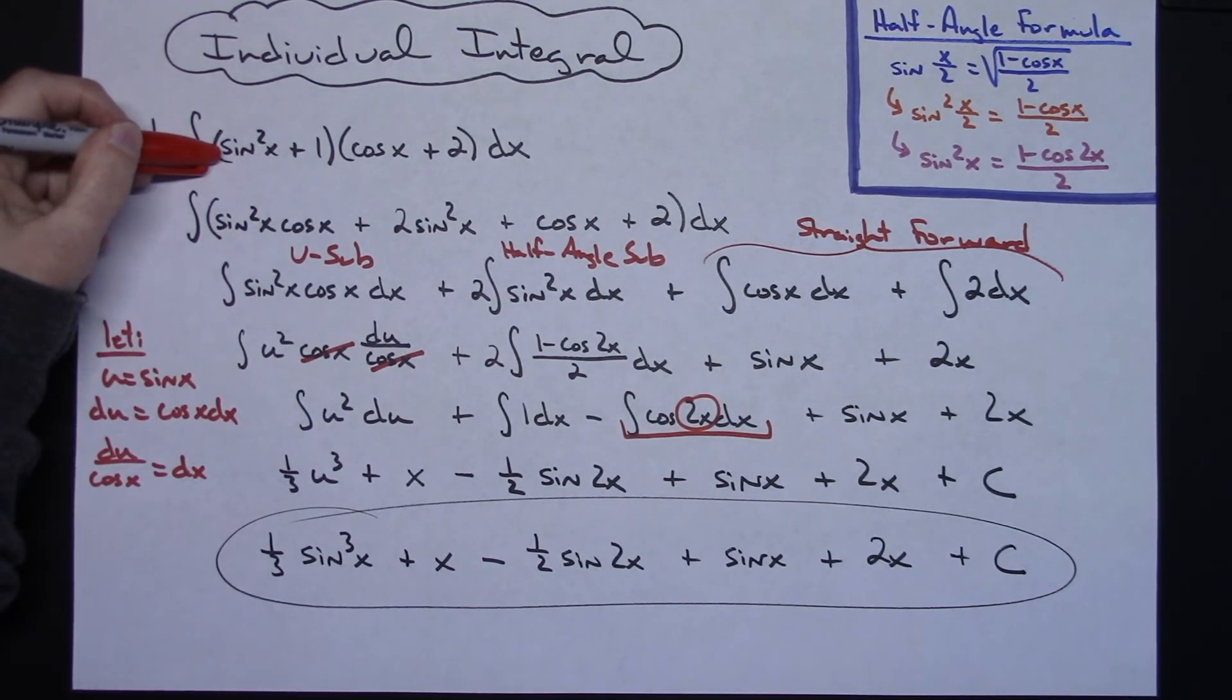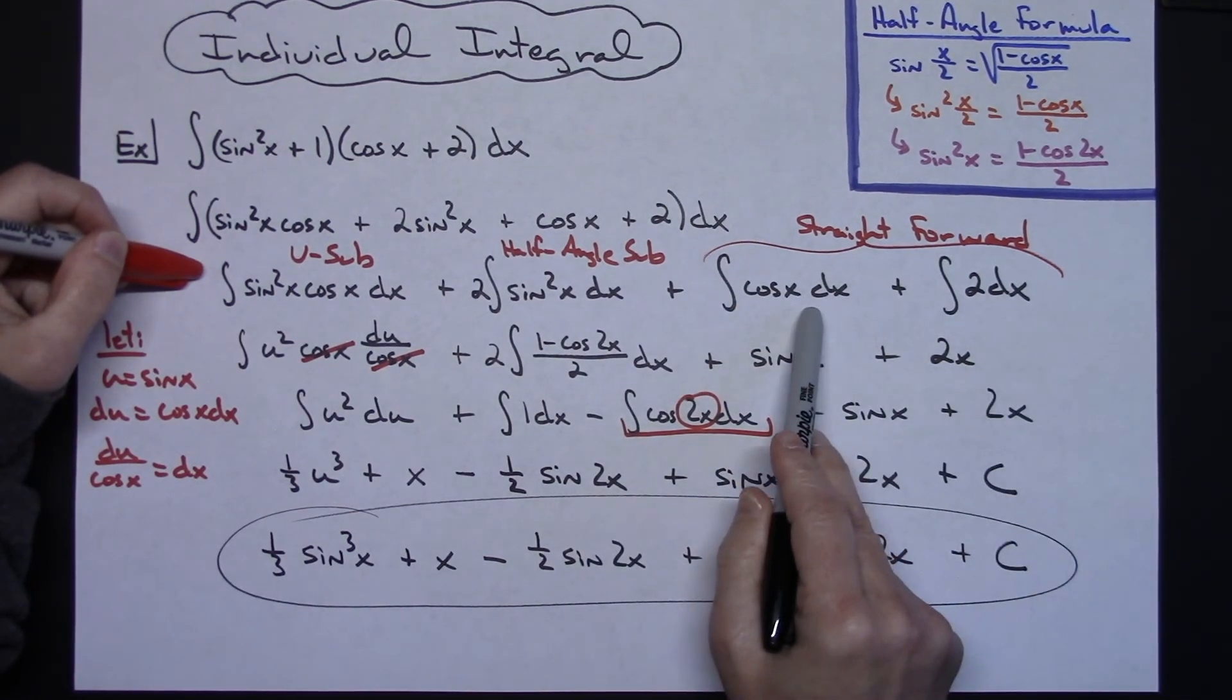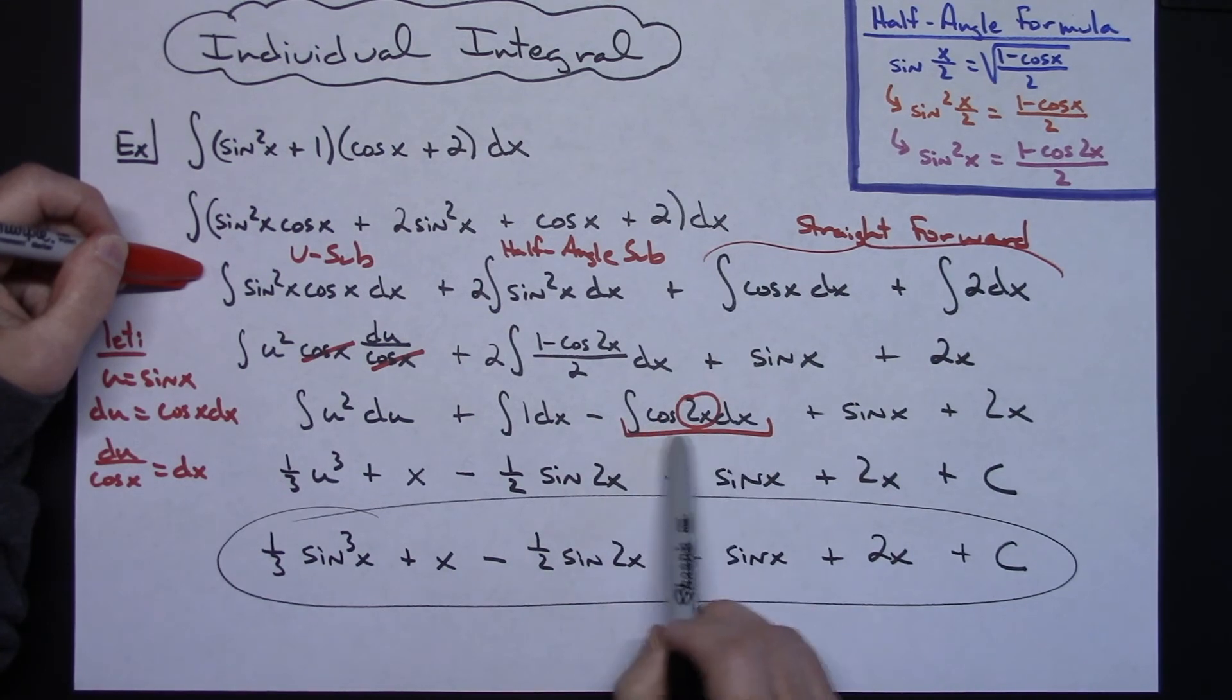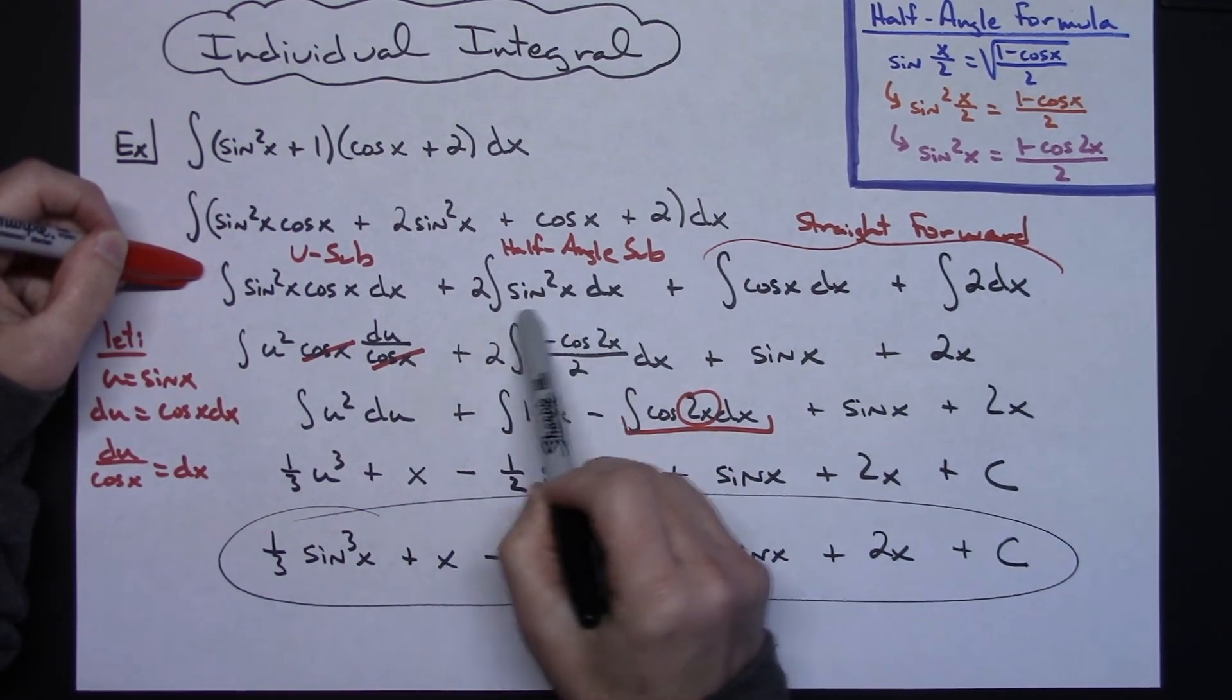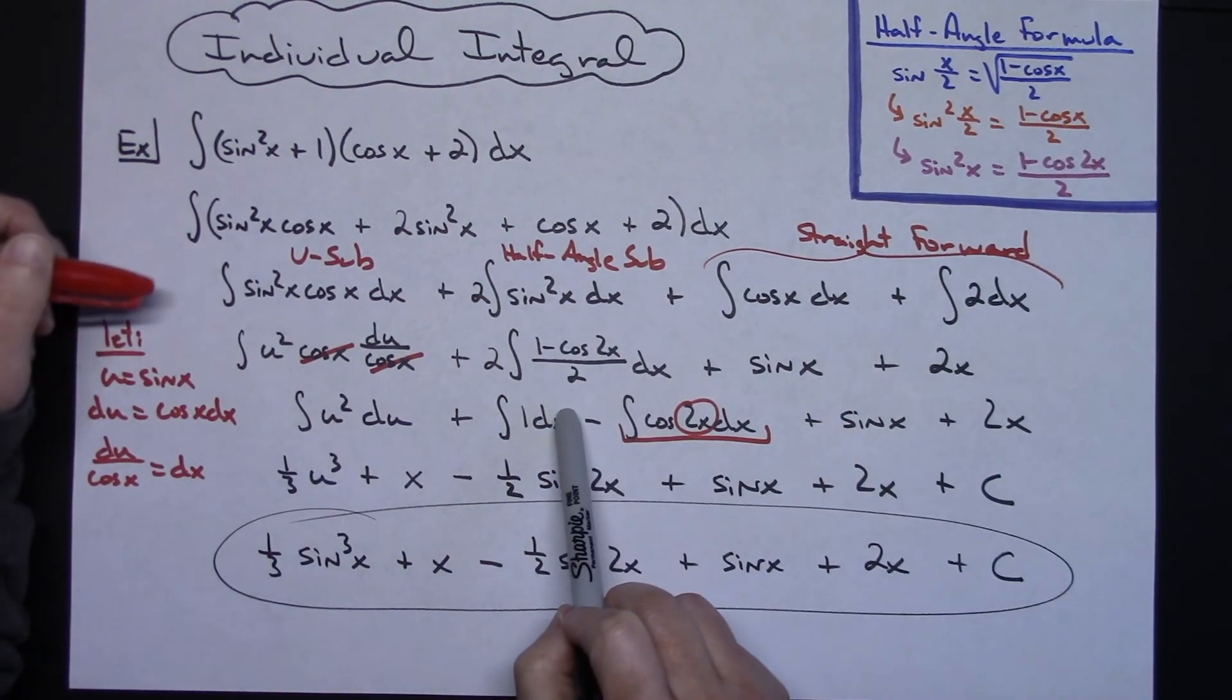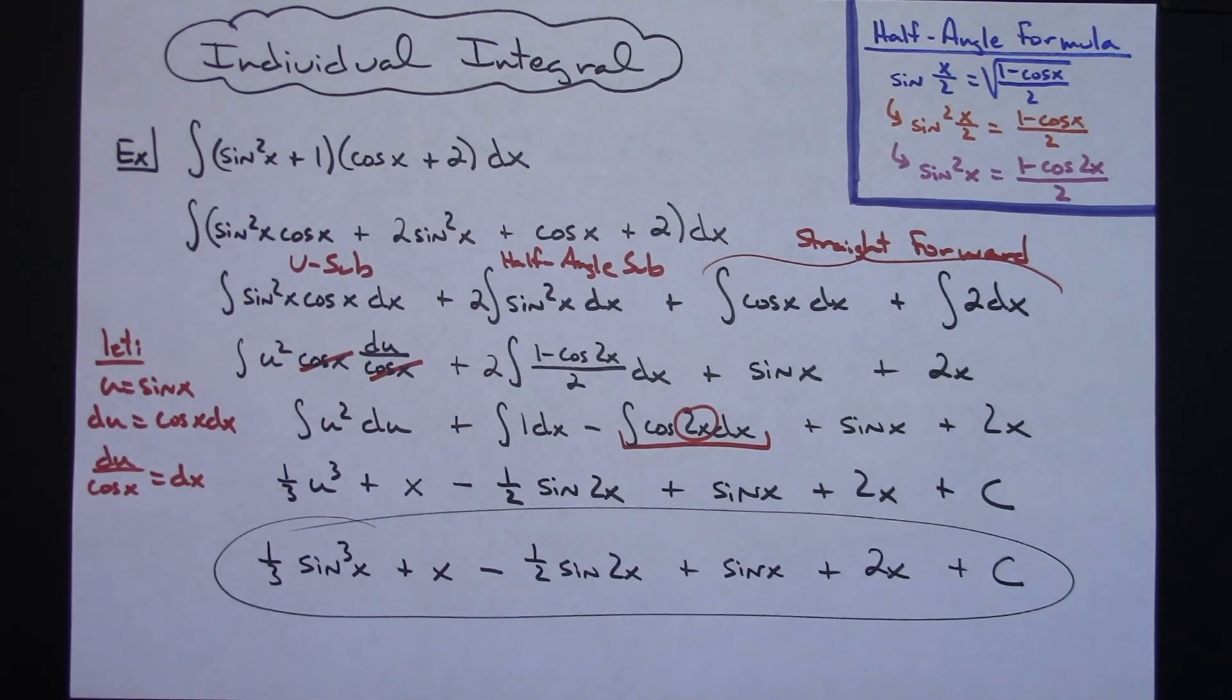Okay so all in all not a bad integral after that initial multiplying this out and then breaking it into the individual integrals, two of them being very simple, this one also being relatively simple with the u sub, and then probably the only trickiest part right here is making sure that that half angle substitution gets substituted in there. So definitely thanks for watching, if the videos are helping give me a thumbs up, don't forget to share with your friends and of course subscribe to the channel, thanks.